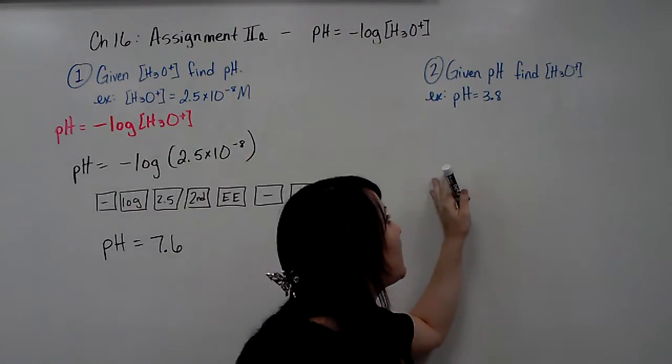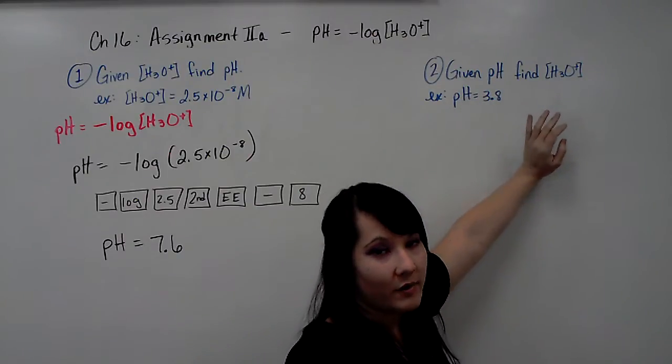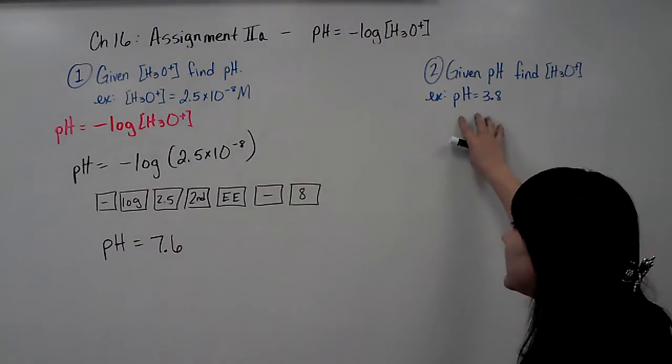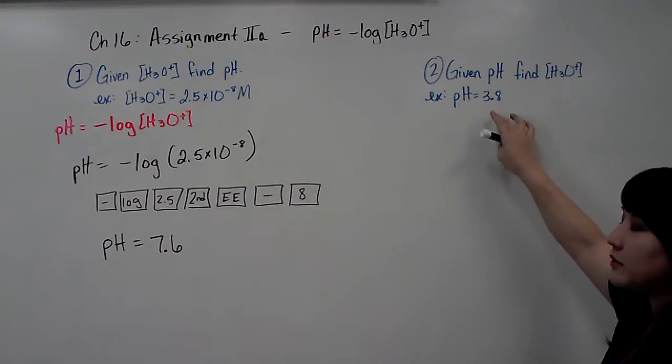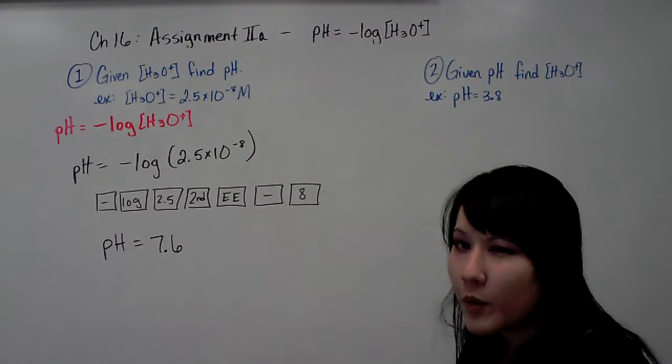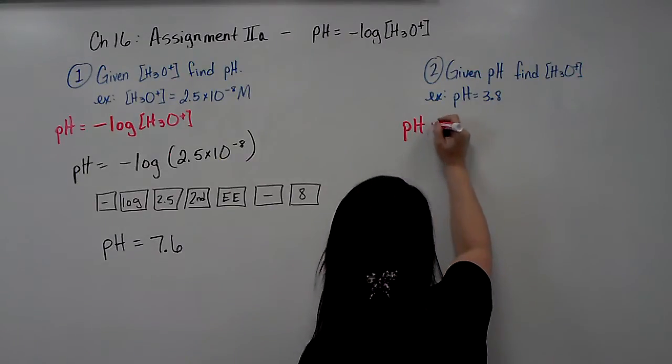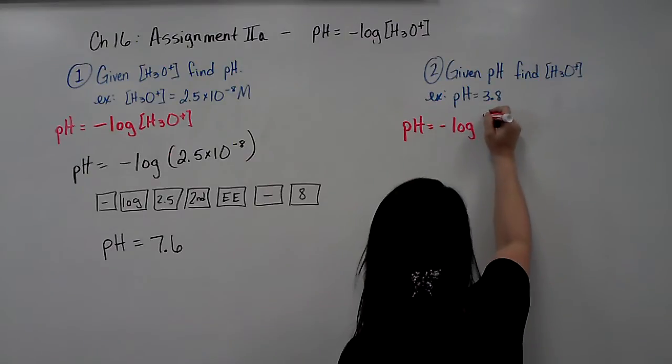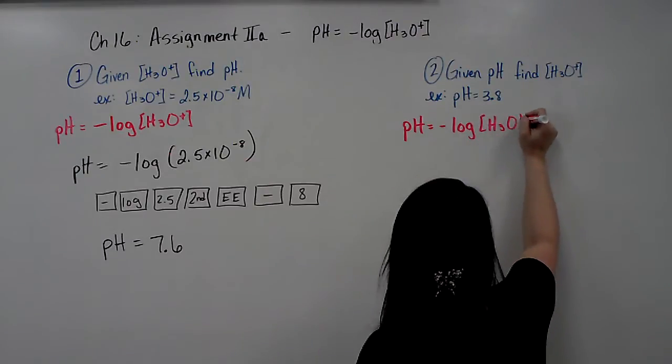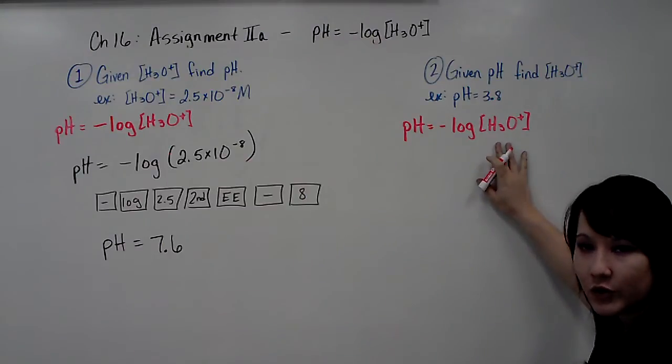The second example is going to be the opposite. If you're given the pH and asked to find the hydronium ion concentration, in this example I'm giving you a pH equals 3.8. So you still use the same equation, but we're going to derive it, meaning we're going to rearrange it. pH equals negative log of hydronium, and we're actually given pH, so we want to solve for hydronium.